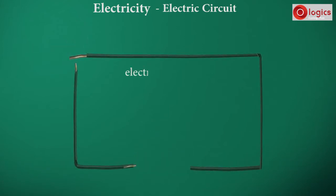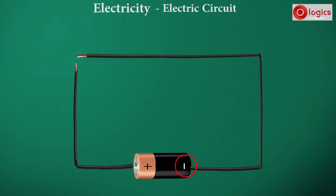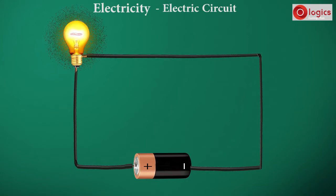These are the electric wires. One wire connecting from the positive terminal, and another wire from the negative terminal. These two wires are connected to a bulb.